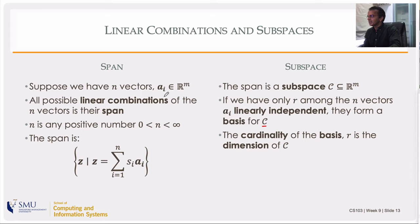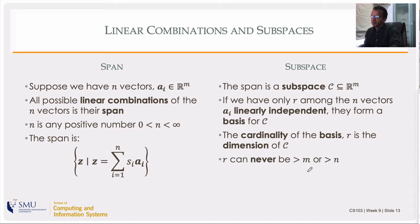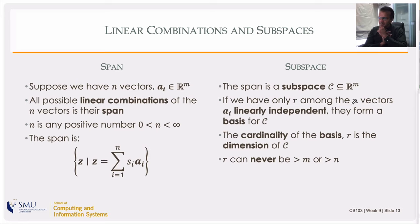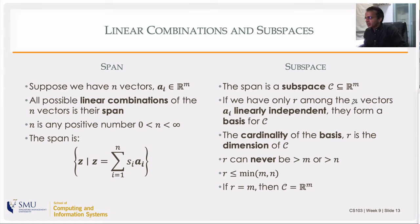The subspace will have r linearly independent vectors as a basis. The cardinality of the basis — the number of elements, r — is the dimension of that space. For a matrix of m rows, n columns, and rank r: r can never exceed m, because you can't have more linearly independent vectors than the number of components, nor can it exceed n, the total number of vectors. So r ≤ min(m, n).